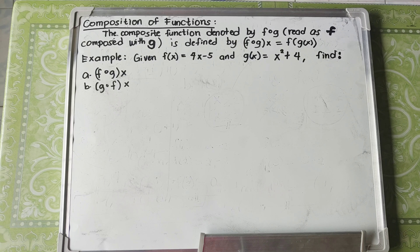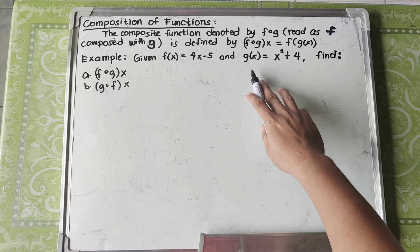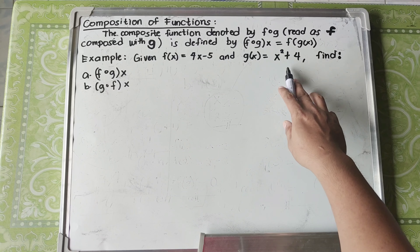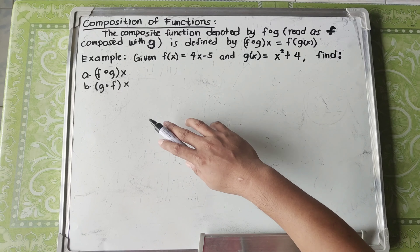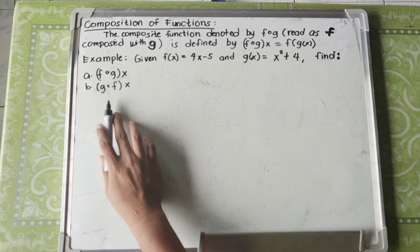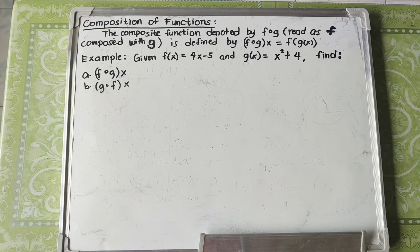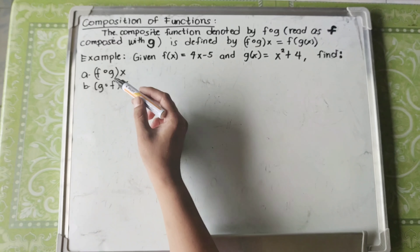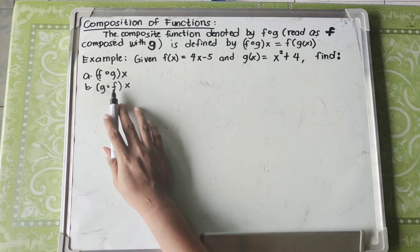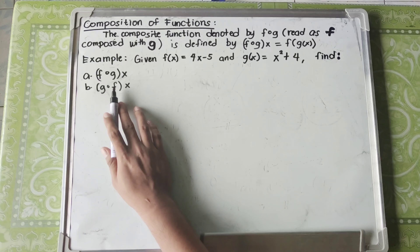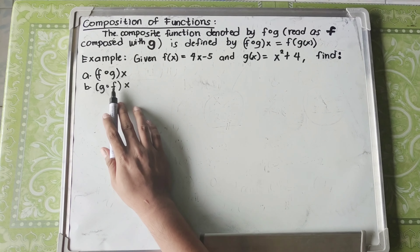To understand this more, let's explore this topic using an example. Given F of X is equal to 4X minus 5, and G of X is equal to X squared plus 4, find: A) F composed with G, and B) G composed with F. In this lesson, A and B are not the same — remember, they are not the same, because the results of these two are not the same.